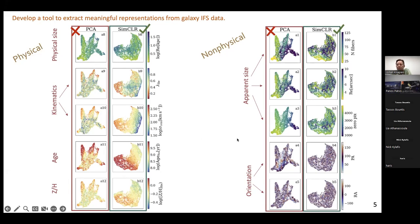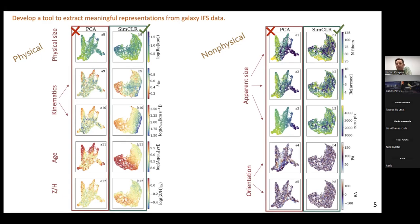The contrastive learning algorithm SIM-CLR finds differences in physical parameters and ignores non-physical parameters. Comparing SIM-CLR against PCA (principal component analysis), the SIM-CLR separates galaxies cleanly by physical properties — for example, it cleanly separates old from young galaxies in the age map — whereas PCA spreads them randomly. Critically, for non-physical parameters such as number of fibers, number of zero-level pixels, position angle, and right ascension, PCA is very sensitive to these instrumental effects while SIM-CLR ignores them. This is the strength of the method: insensitive to non-physical parameters but sensitive to physical ones.